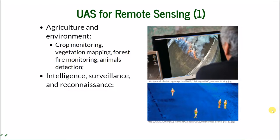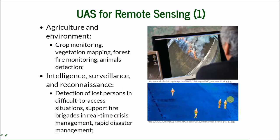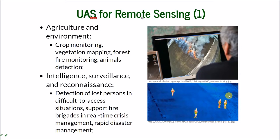It can also be used for intelligence, surveillance, and reconnaissance. Thermal imagery is widely used for detection of lost people in difficult-to-access situations in the mountains, to support fire brigades in real-time crisis management, and for rapid disaster management. It is also used for surveillance in a military context.